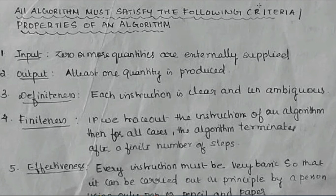Next one is output. An output of an algorithm should have at least one quantity. At least one quantity must be produced. If you don't want any output, then why to write the program?